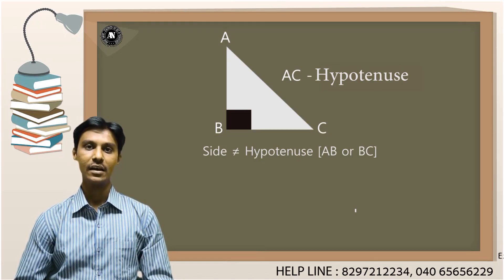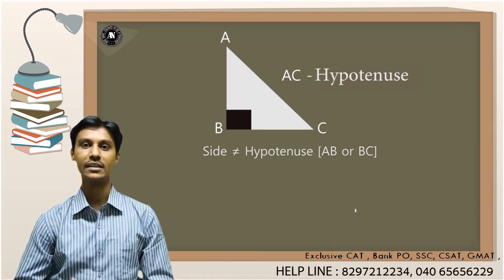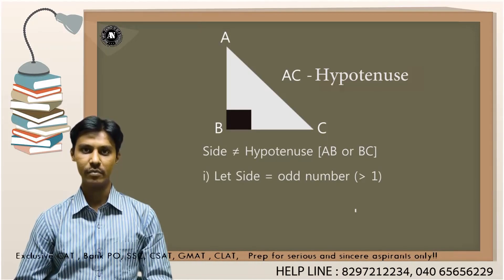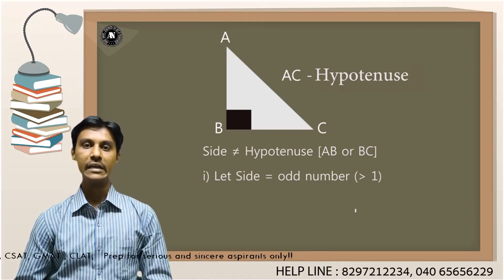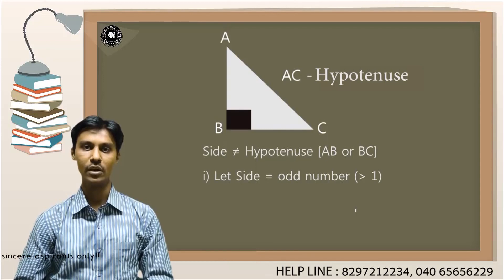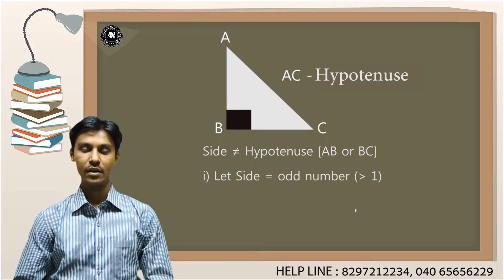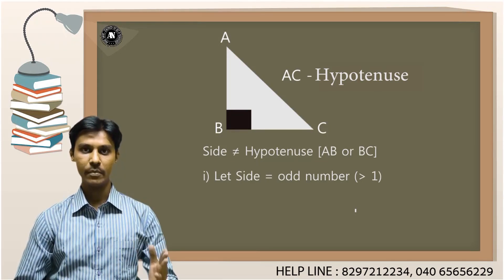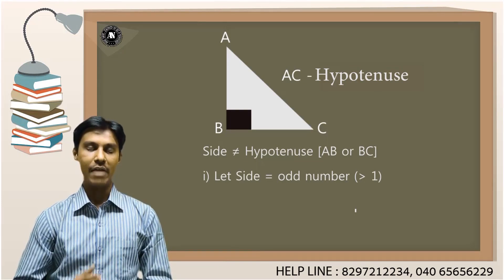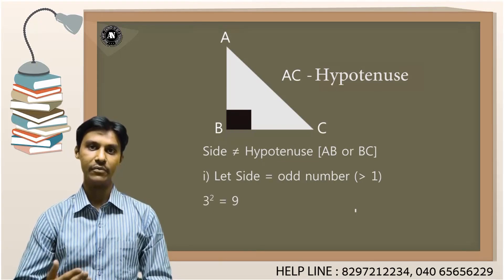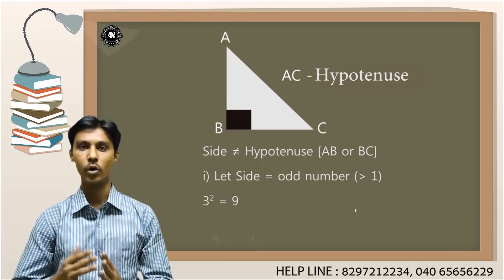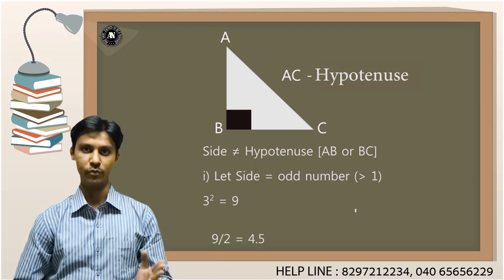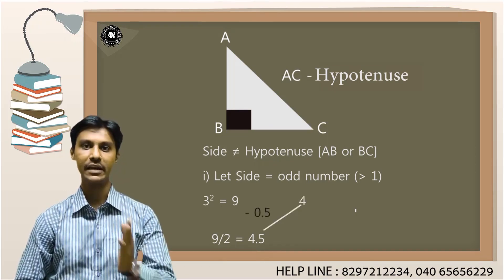So let me select a side which is not equal to the hypotenuse and let me select that side as an odd number first. The lowest odd number in the natural number series is 1, but let me take a side which is not equal to 1, so the lowest number becomes 3. I have chosen a number called 3, which is an odd number. My first number in the Pythagorean triplet is 3. I will square that 3 to get 9. I will divide 9 by 2, which results in 4.5. From the result 4.5, I will subtract 0.5 to get 4. That is my second number in the Pythagorean triplet.